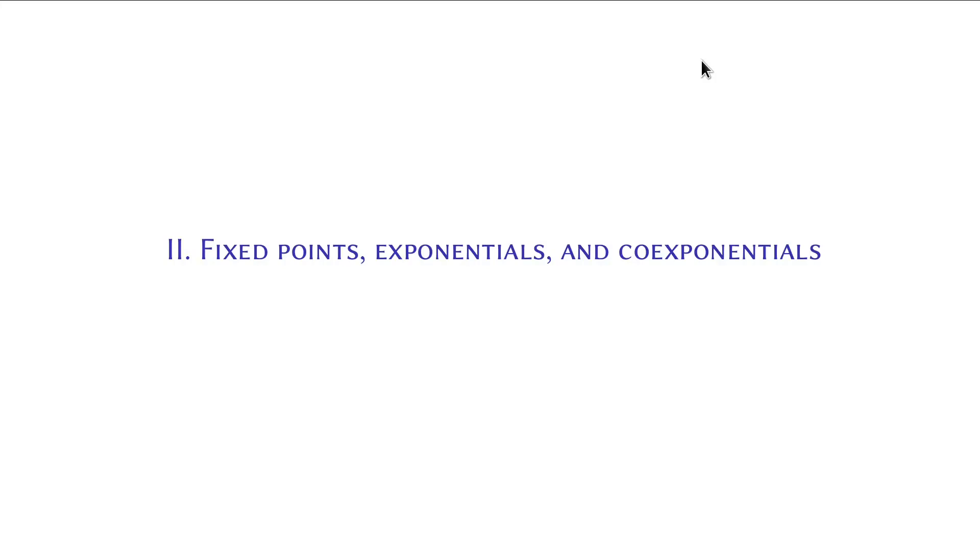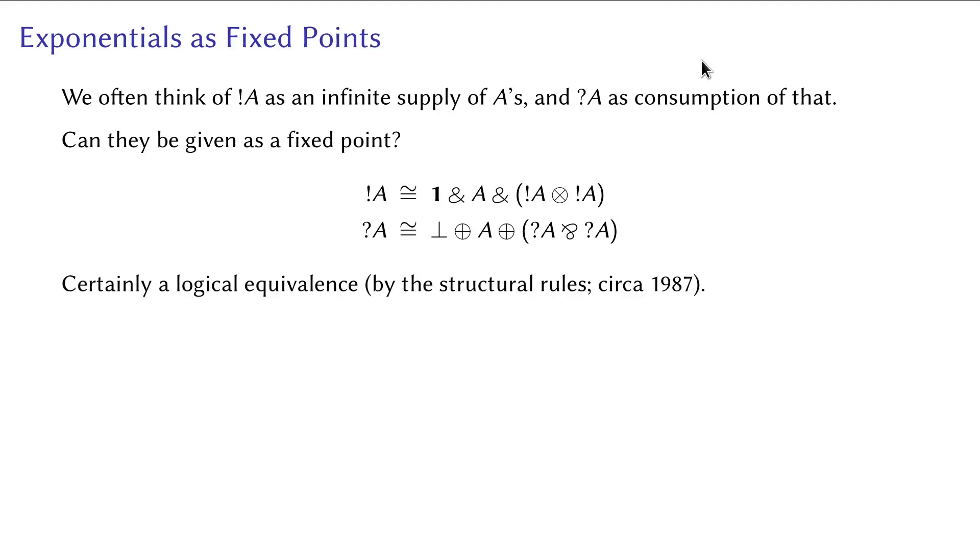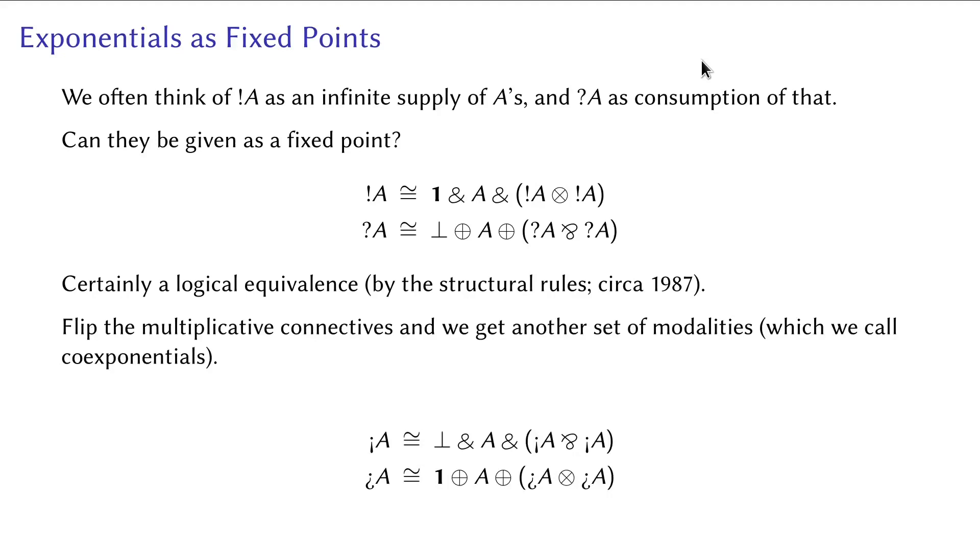Using exponentials to represent client-server doesn't work out. We're going to find out why with the help of fixed points. We often think of bang A as infinite supply of A and question A as consumption of that. It is therefore very natural to try to encode them using fixed points. Indeed, this encoding gives a logical equivalence. If we flip the multiplicative connectors in the encoding and get another set of modalities, which we will call co-exponentials. The question is, what's the difference between these two kinds of modalities? And are co-exponentials useful at all?